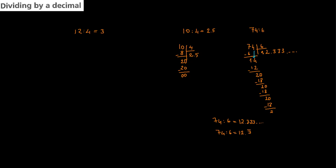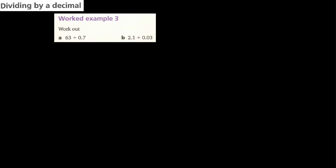Now let's continue with dividing by a decimal. Dividing by decimals is different from multiplication and addition. While dividing by a decimal number, we must first get rid of the decimal point in the divisor. For example, 63 divided by 0.7: I'm going to multiply both numbers by 10 to get rid of the decimal point. This does not affect the operation.